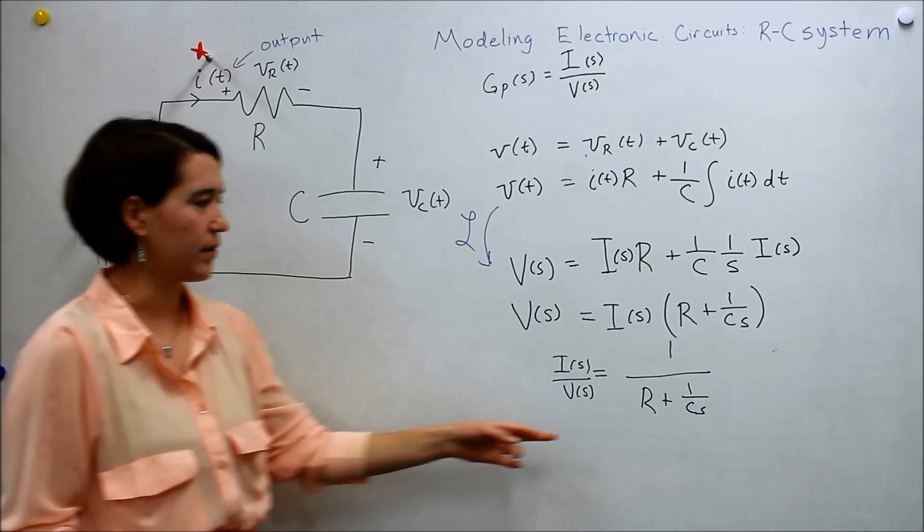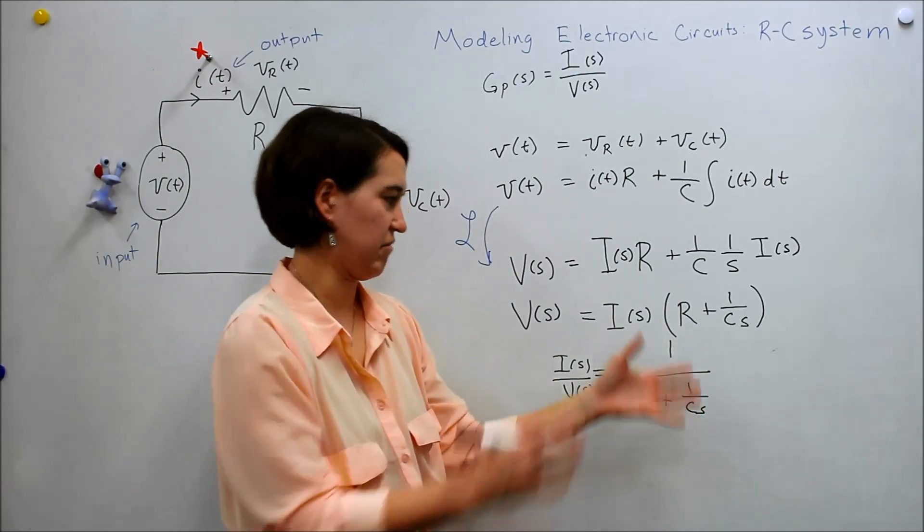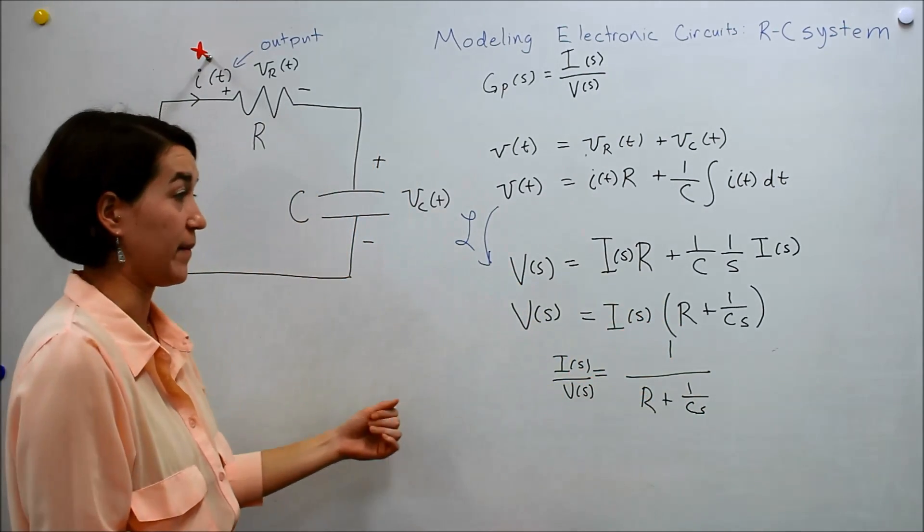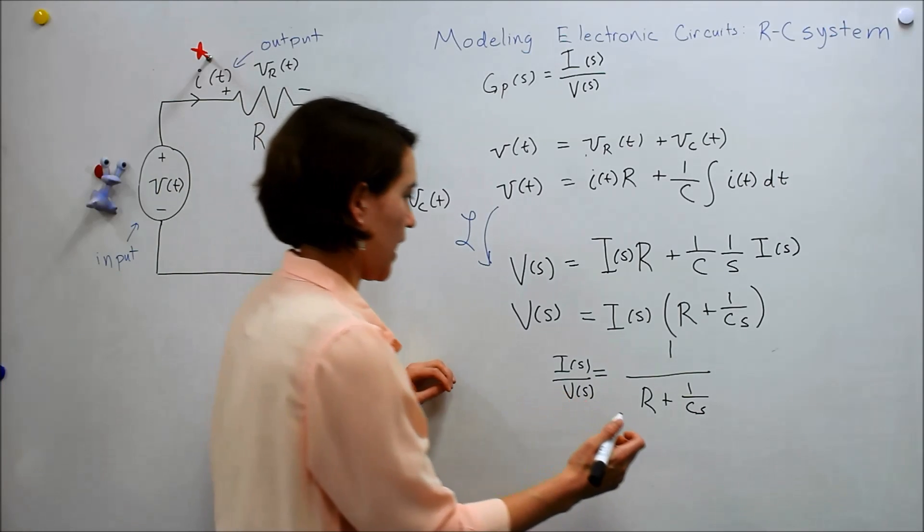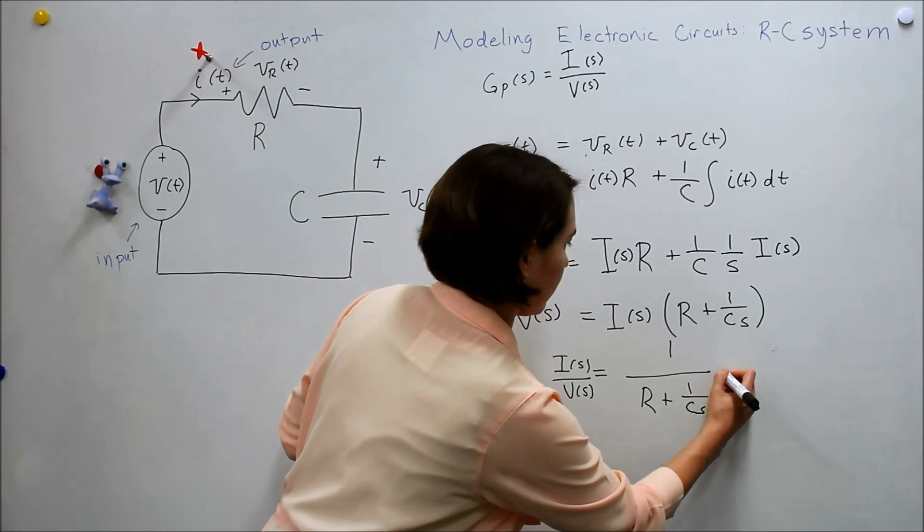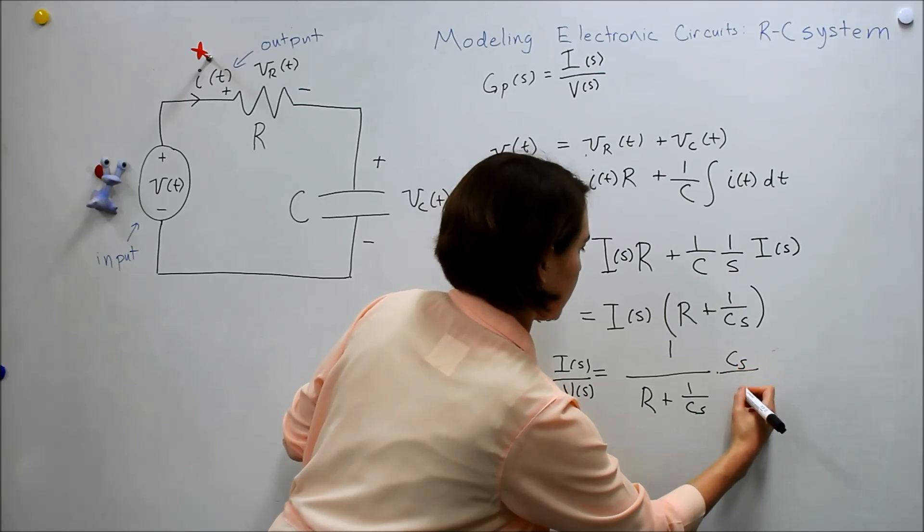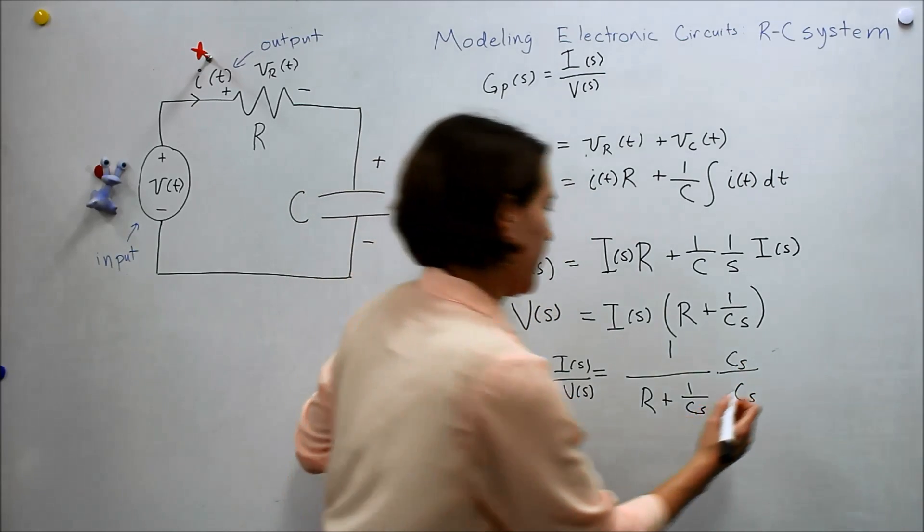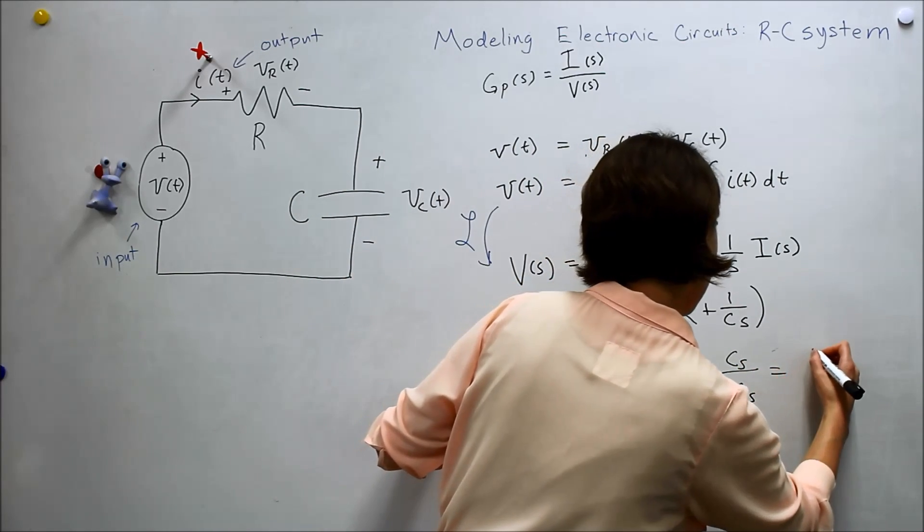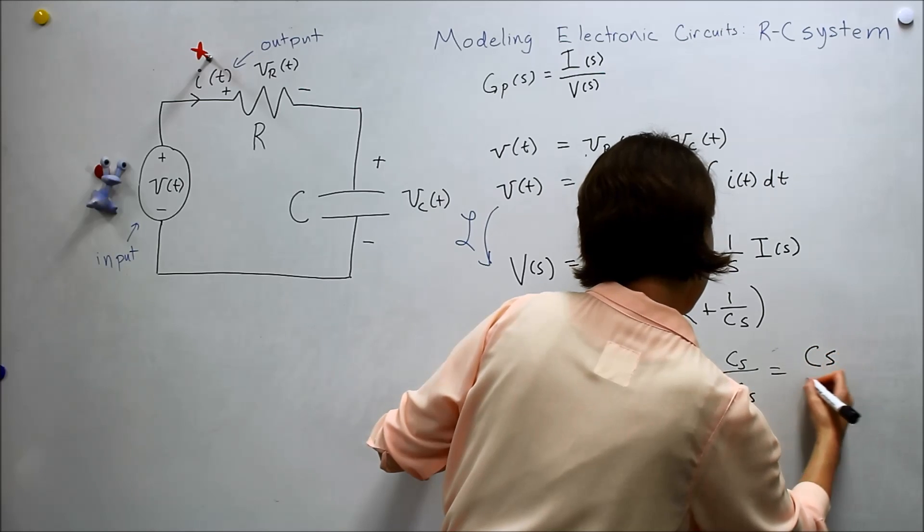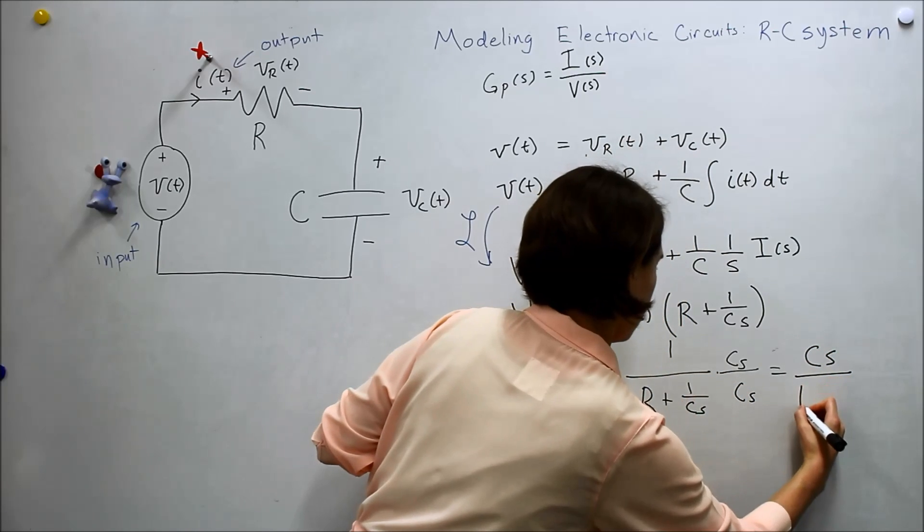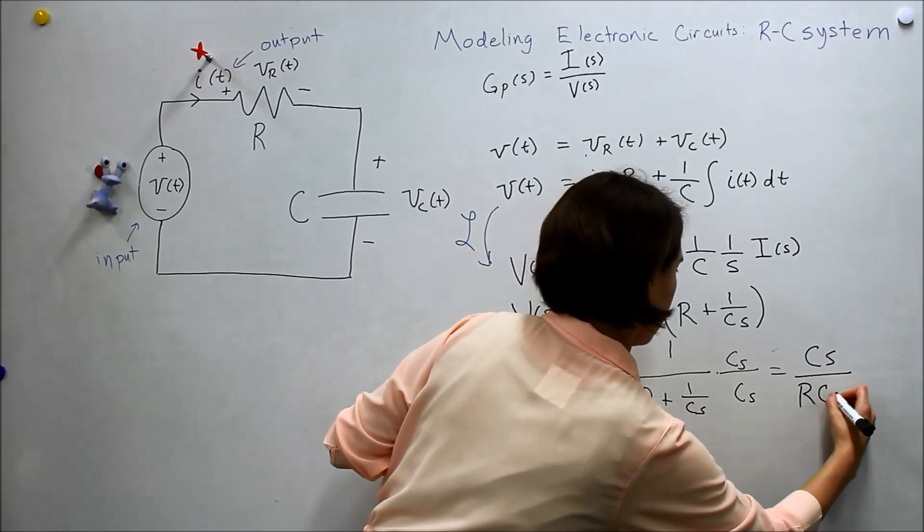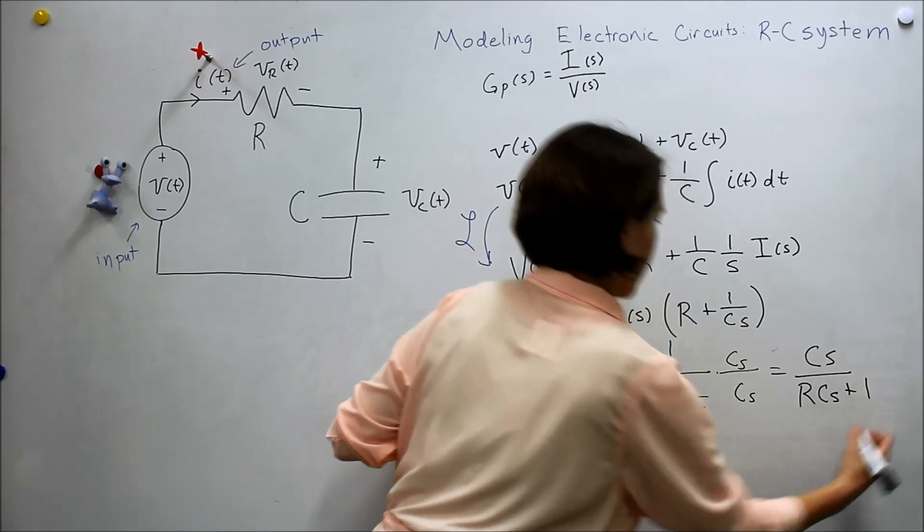And a lot of times we don't like to have this c s or something in the denominator. So we can multiply this by c s and c s if we like. And get something like that.